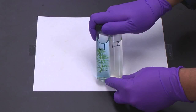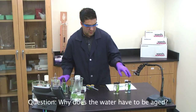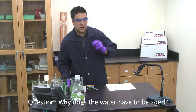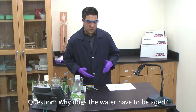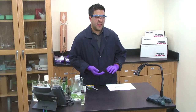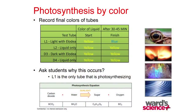Question from the chat: why does the water have to be aged? You don't want to have chlorine in any of these experiments. Looking at our results table, L1 in the light with the aquatic Elodea turned blue — this shows that photosynthesis did occur and we did produce some oxygen. So it's a really easy way to demonstrate photosynthesis by color in your classroom.